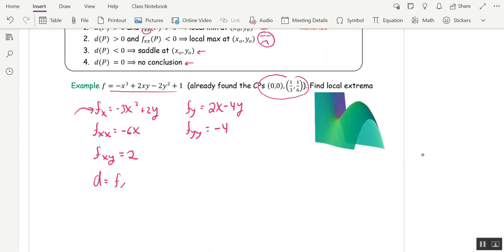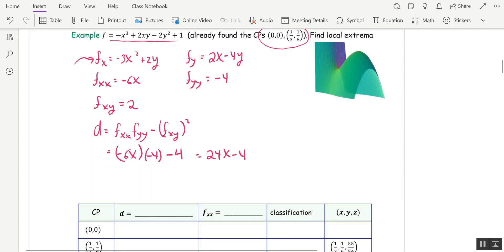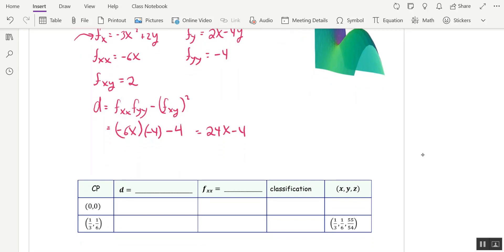All right, so our discriminant, it's fxx, fyy minus fxy quantity squared. So for us, that's negative 6x times negative 4 minus 2 squared, which is 4. So we get 24x minus 4. That's a function of x and y. There's no y there, but it's a function of x and y. And so we can plug in our critical points and test them. And so I have a little chart here, and we're going to take that discriminant and put it down on this line, 24x minus 4. I'm going to fill in fxx. That was negative 6x. And now we can go ahead and classify each point.